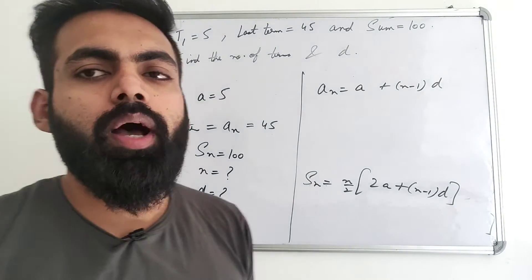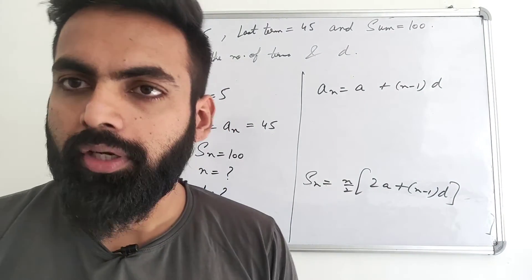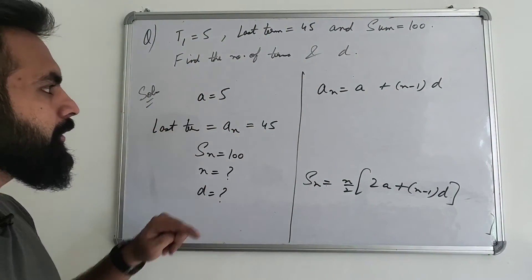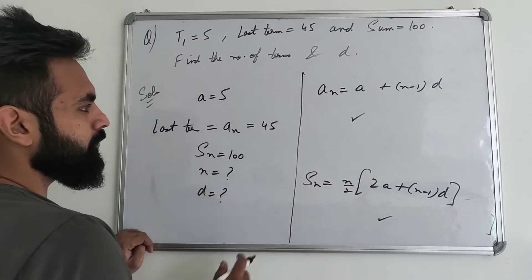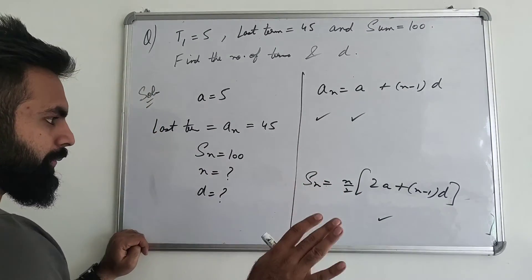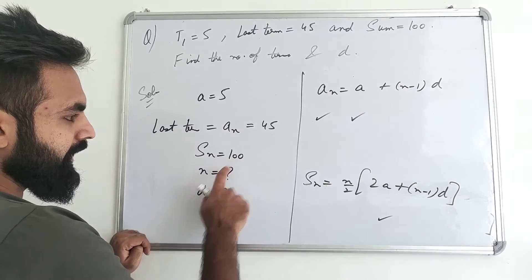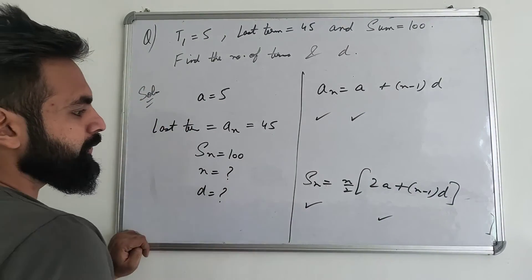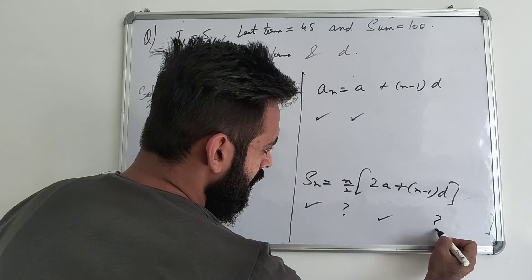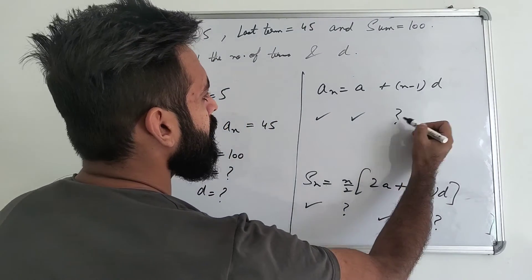Now, tick the same value given. You will know that we will approach this formula. A value is 5. So here I take it. Here I take it. The last term is 45. So I take it. This is given. After that, SN is 100. So SN is 100. So I take it here. And N and D is missing. So here, here, here, here, here.